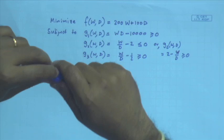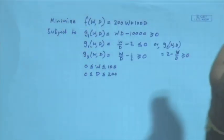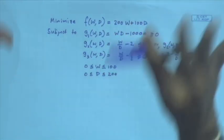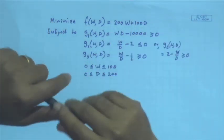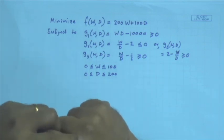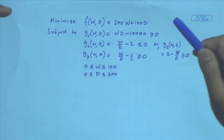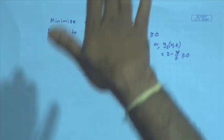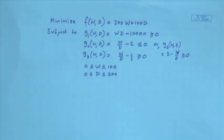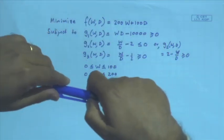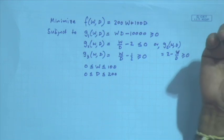We worked with Tata Motors in Pune on a suspension problem. We described the whole problem, there were a number of variables, we solved it and went to show them the solution. The person said 'this is not acceptable to us.' He explained that the front natural frequency should be smaller than the rear natural frequency for pitching motion to die down — this was in-house developed knowledge they always use in design, but he had not told me that before.